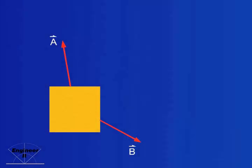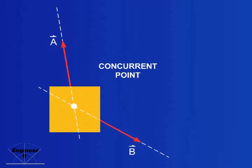To find the location of a resultant, we must find the concurrent point of the two vectors A and B. Vector A can act anywhere on its line of action, as can B. Where their two lines of action meet is called the concurrent point of the two vectors.